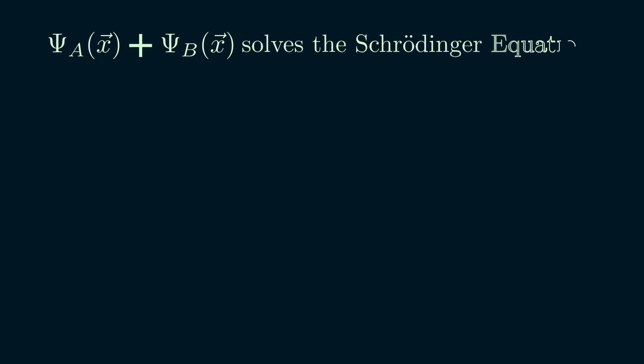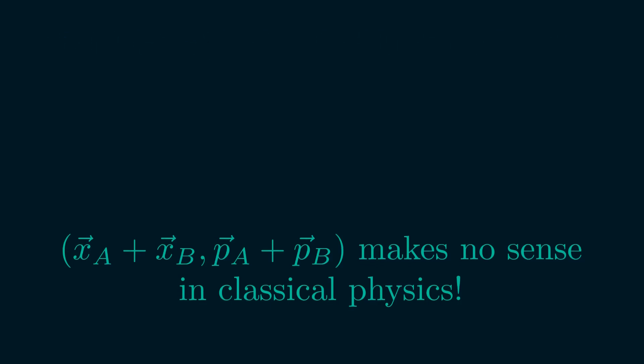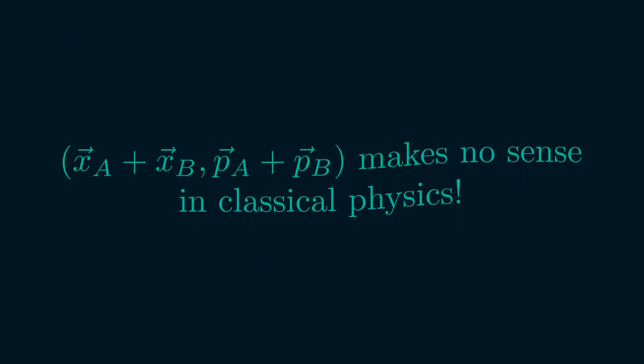And again, the superposition of states is a valid physical reality due to the fact that it also satisfies the Schrödinger equation, which is something we saw earlier. So the reason we don't see superposition in classical physics is simply that classical systems aren't built on a mathematical structure where adding states even means anything physically.